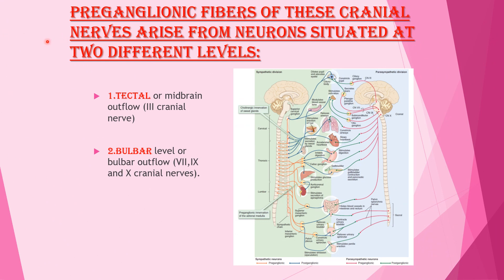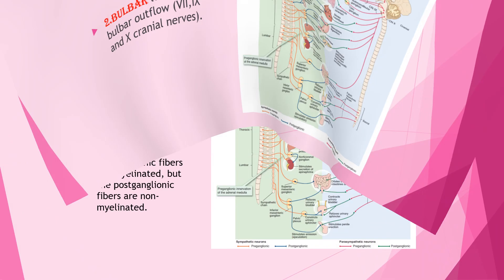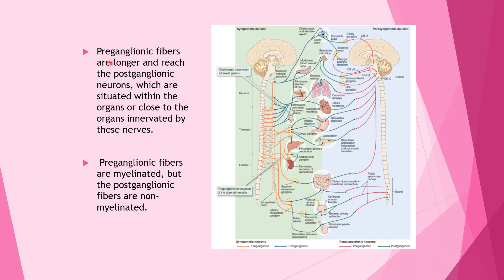Preganglionic fibers of these cranial nerves arise from neurons situated at two different levels: the tectal or midbrain outflow, and the bulbar level or bulbar outflow, which includes the 7th, 9th, and 10th cranial nerves. Preganglionic fibers are longer; they reach postganglionic neurons situated within or close to the innervated organs. Preganglionic fibers are myelinated, but postganglionic fibers are non-myelinated.